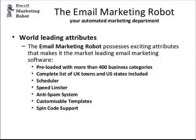With the package — all available from emailmarketingrobot.com — you get the software, over 400 business categories to get you started, and a complete list of UK towns and US states to help with targeting. It comes with a scheduler so you can set the software to start first thing in the morning and stop at a reasonable time in the evening, giving you a better chance of someone being at their computer when the email arrives.